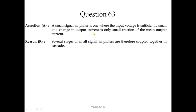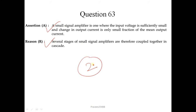Question number 63. A small signal amplifier is one where the input voltage is sufficiently small and the change in output current is only a small fraction of the mean output current. This statement is correct. Several stages of small signal amplifiers are coupled together in cascade — this is also correct but not the correct explanation of the given assertion. So the answer is option 2.